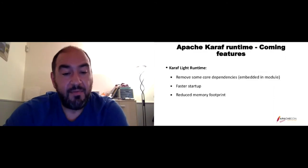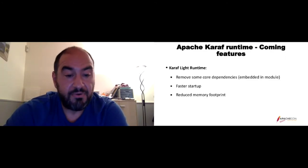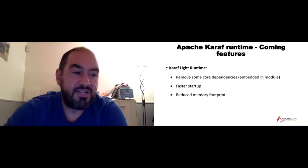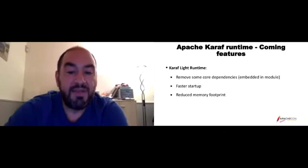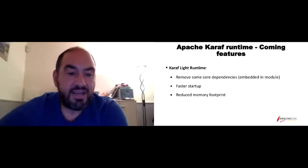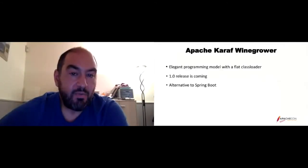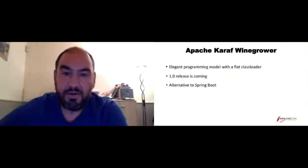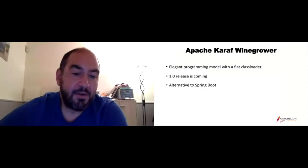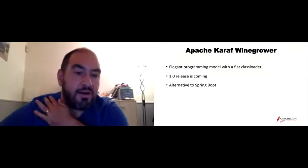We're aiming for a very light runtime with faster startup and reduced memory footprint. OneGrow is really good for that — we can leverage CDS and other techniques. The Karaf runtime itself is also being improved. OneGrow is an OSGi programming model with a single flat class loader. It's already on GitHub at karaf-native/onegrow. A first release is coming soon — we just need to finalize examples and documentation, but most features are already working.